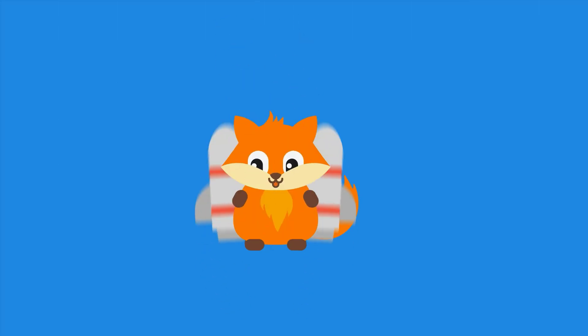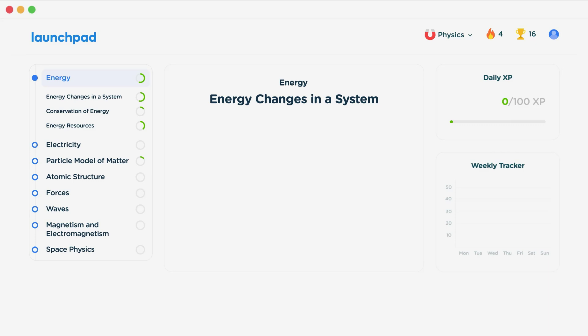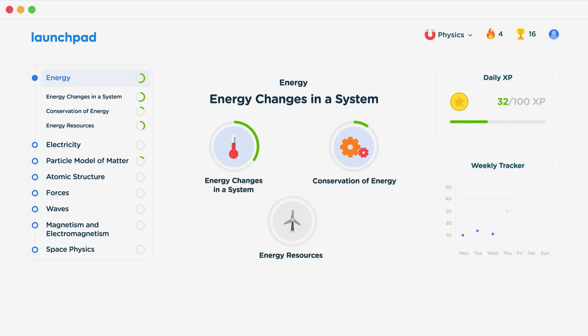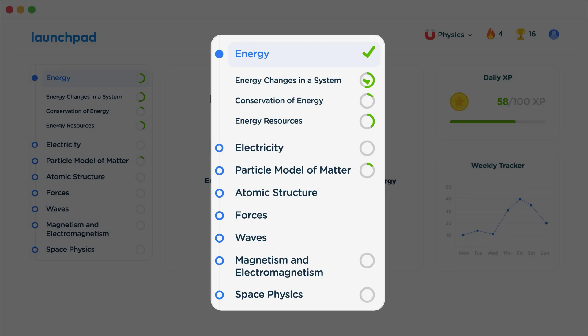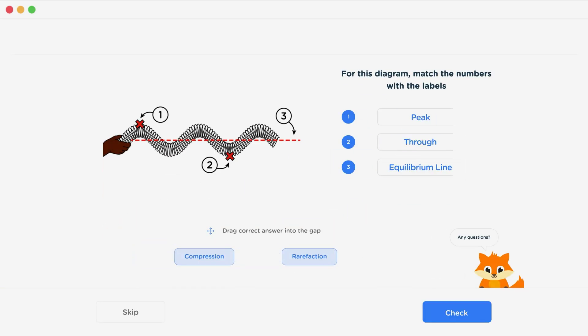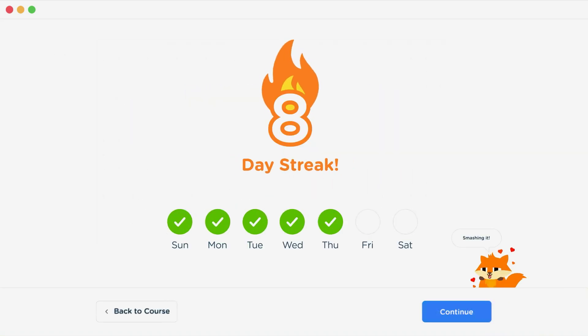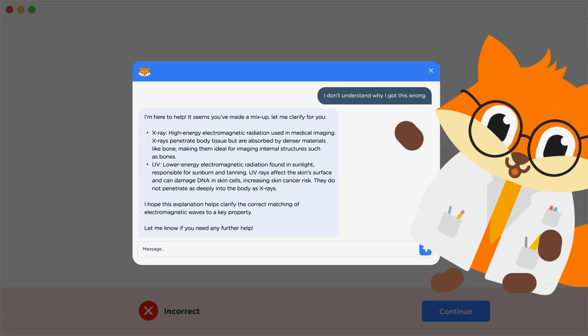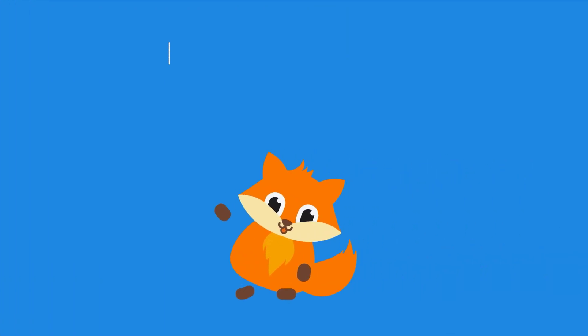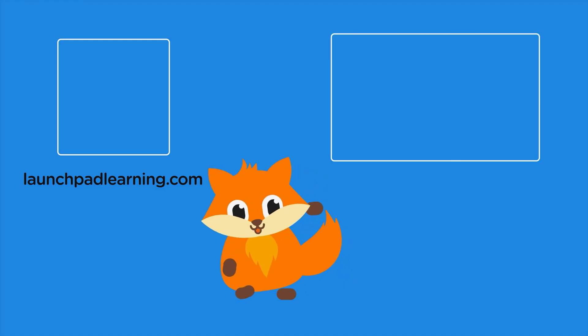If you want to take your GCSE revision to the next level, head over to launchpadlearning.com and check out our smart learning platform that has been designed to get you top results in your exams. We cover your whole specification and make revision fun with interactive quizzes, easy to follow videos and more. You'll be kept motivated by your own AI tutor who is here to support you every step of the way. To check it out for yourself, click here or click here to keep watching a selection of the videos from our full GCSE Physics course. See you there!